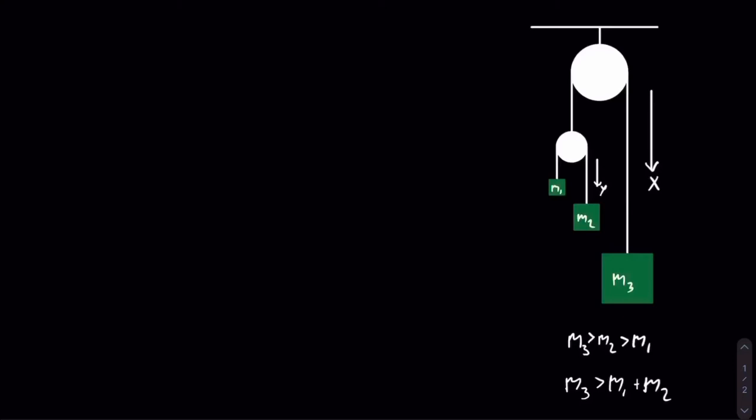I will be using the x and y coordinates to describe the motion of this compound Atwood machine. The x coordinate is measuring the distance of mass m3 from the large pulley, and the y coordinate is measuring the distance of m2 from the small pulley. This system has two degrees of freedom because you can change either one of those coordinates without affecting the other. Two degrees of freedom means that we will have to use the Euler-Lagrange equation twice.